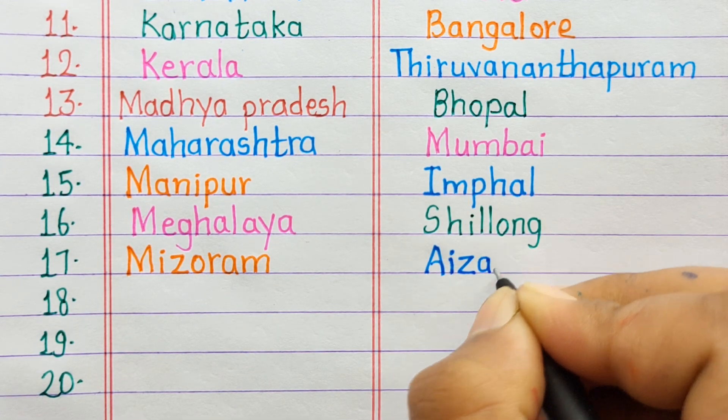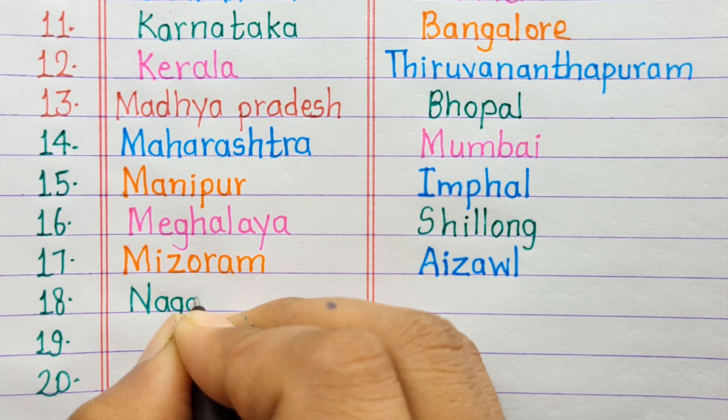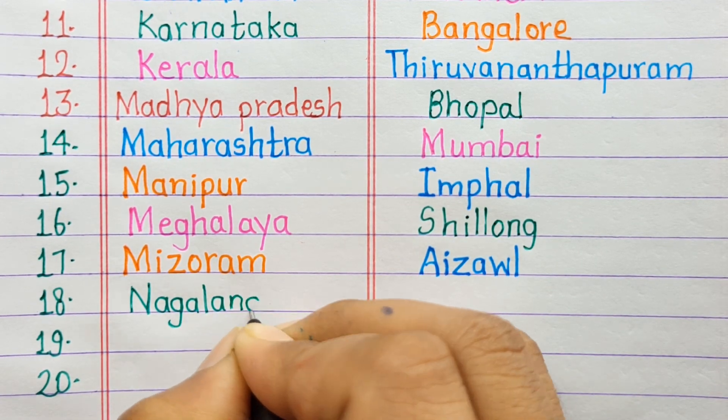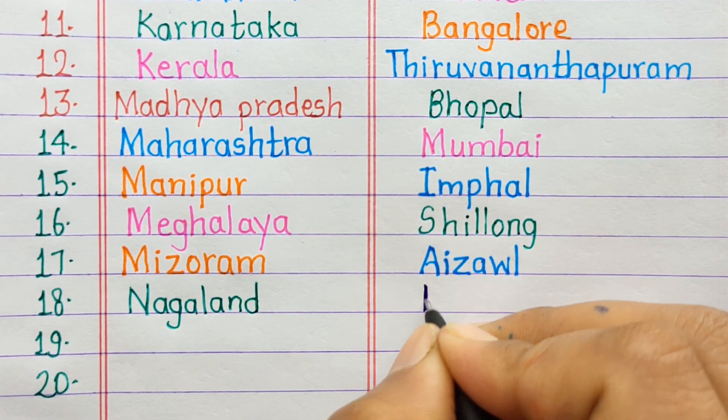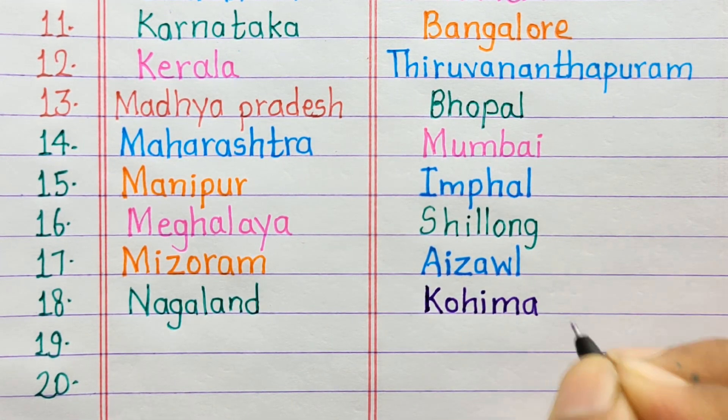Number 16. Meghalaya, Mizoram, Aizawl. Number 18. Nagaland, Kohima.